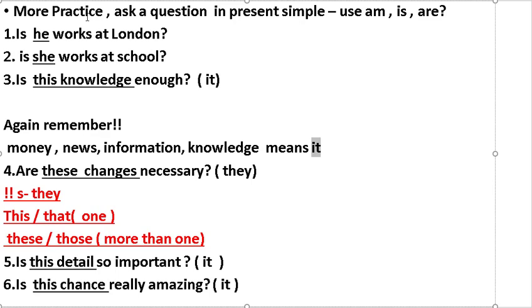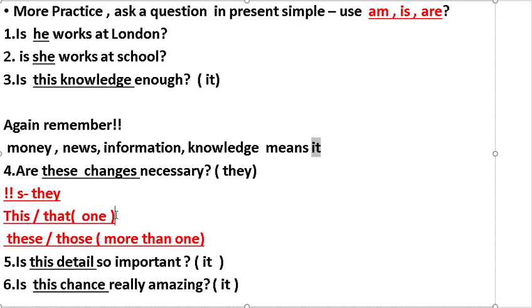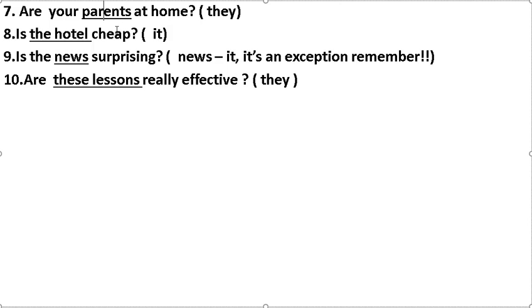More practice — ask a question in present simple using verb 'to be': Does he work at London? Does she work at school? Is this knowledge enough? Remember: money, news, information, knowledge → singular. Are the changes necessary? Is this detail so important? Are your parents at home? Is the hotel cheap? Is the newest surprising? Are these lessons really effective?